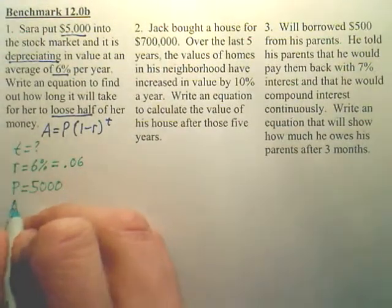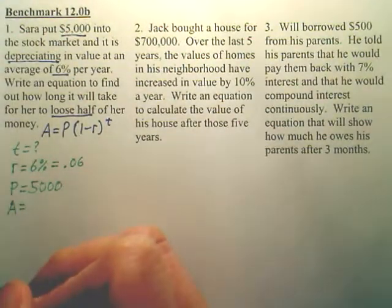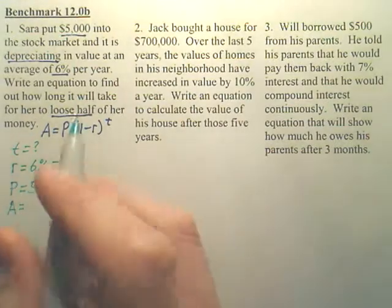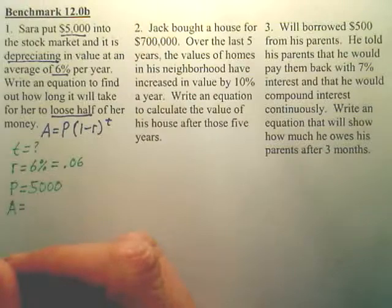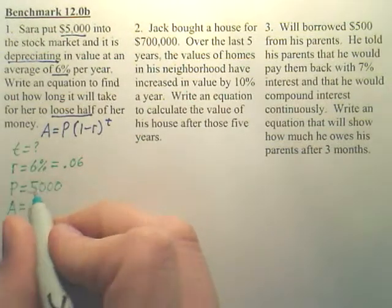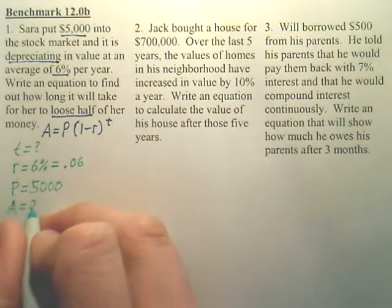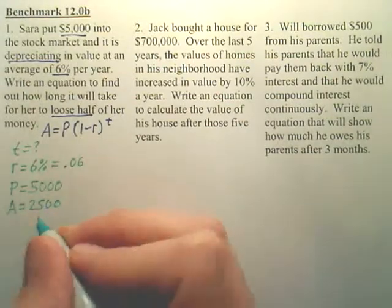And A. Do we have a final amount? We actually do. Read the last sentence: lose half her money. How much did she start with? $5,000. So half her money would be $2,500.